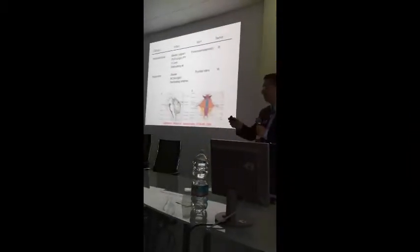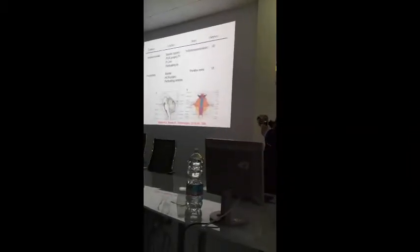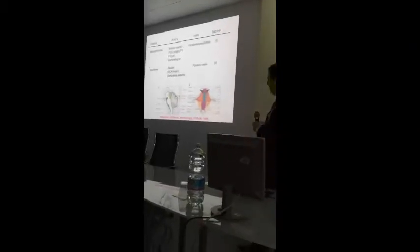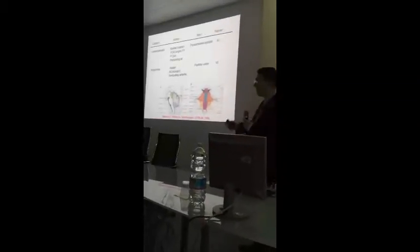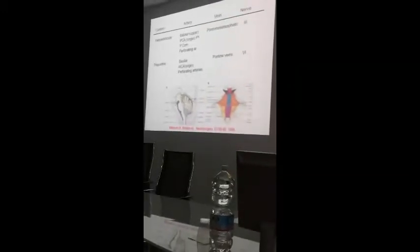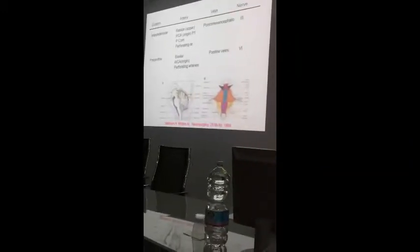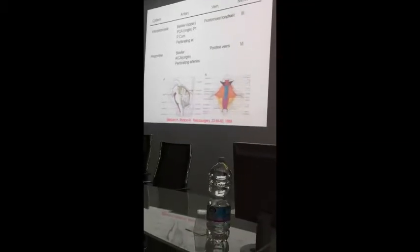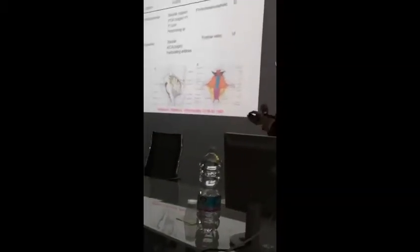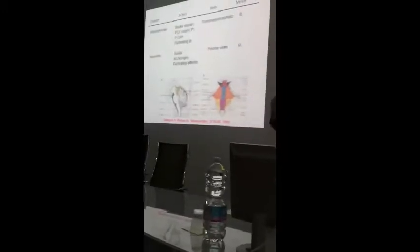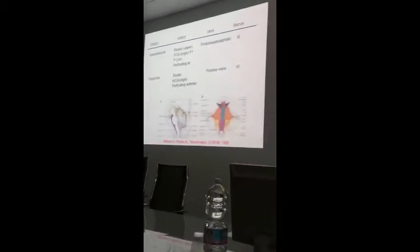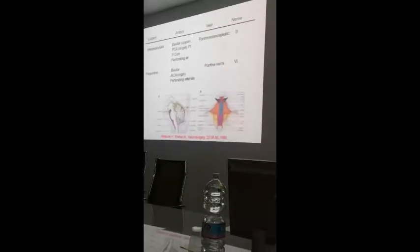Before starting with the surgery, keep in mind the possible structures you are going to see in the interpedicular cistern: the basilar artery, the posterior communicating artery, the P1 segment of the posterior cerebral artery, even the P2, and the third nerve itself. When we go a little bit deeper into the prepontine space, you can have an idea of the whole basilar artery, the perforating arteries, the origin of the ICA, and the sixth nerve.